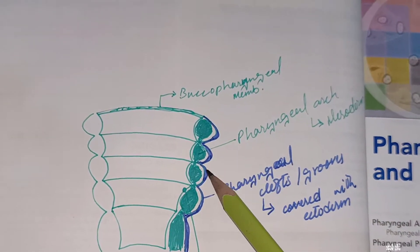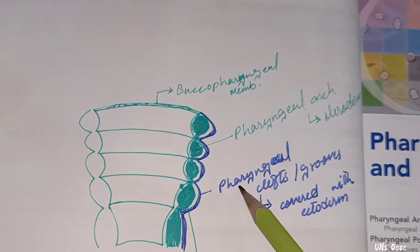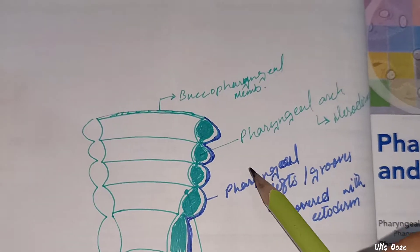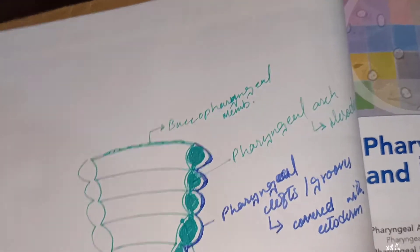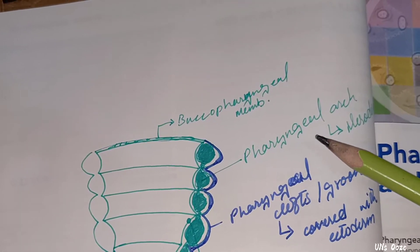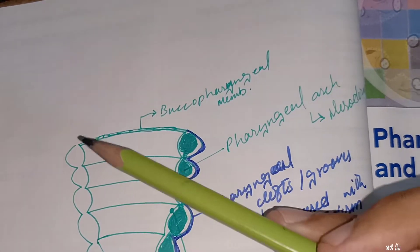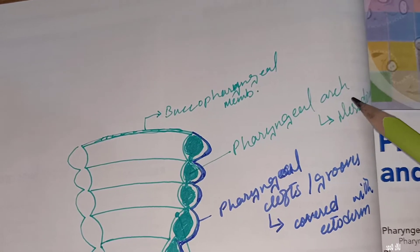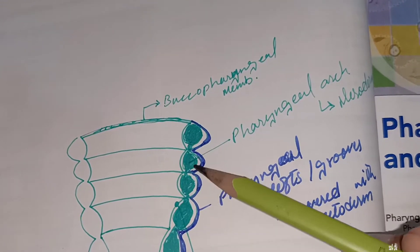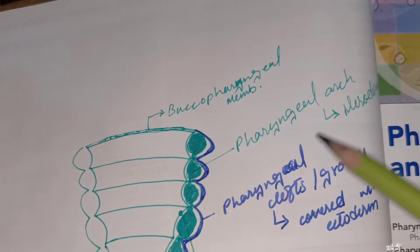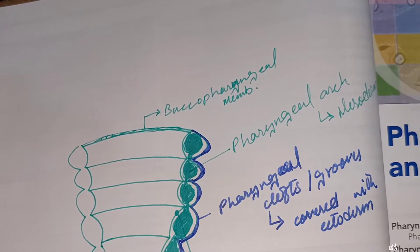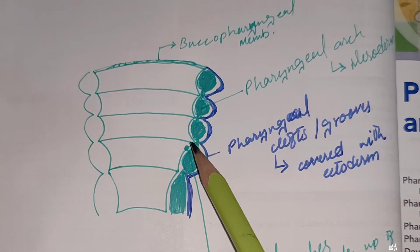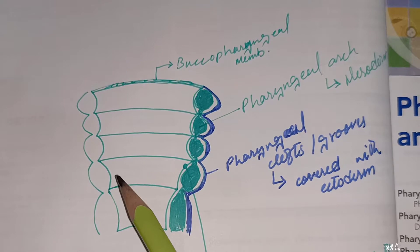This is the outermost layer — we call it pharyngeal clefts or grooves, and this is covered with ectoderm. Then there are the pharyngeal arches — what are the pharyngeal arches? This is what you see inside: the green color. This is the pharyngeal arches, made up of mesodermal mesenchymal tissue.